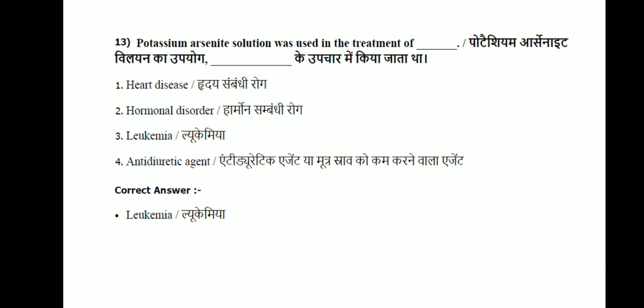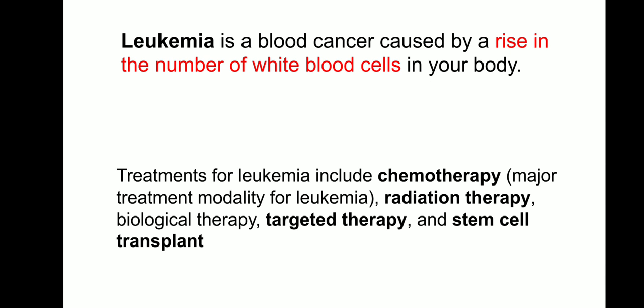Question 13: potassium arsenate solution was used in the treatment of which condition? Options are heart disease, hormonal disorder, leukemia, or anti-diuretic agent. The correct answer is leukemia. Leukemia is a blood cancer characterized by an elevated number of white blood cells. Current treatments include chemotherapy, radiation therapy, biological therapy, and stem cell transplant.